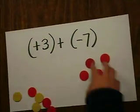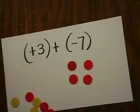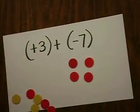So it's 4 negative tiles, which is negative 4. That's how you add integers.